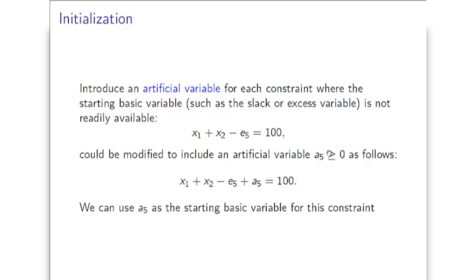If we get a 0 solution as the optimal solution for this problem, then it means that we'll be able to find a feasible solution for the original problem. If we are not able to find the optimal solution with objective value 0, then this will mean that the original problem was infeasible. The other approach, instead of minimizing this sum explicitly, is to penalize non-zero values for artificial variables by adding these artificial variables to the objective with particular coefficients. I will illustrate both of these approaches on the same example.